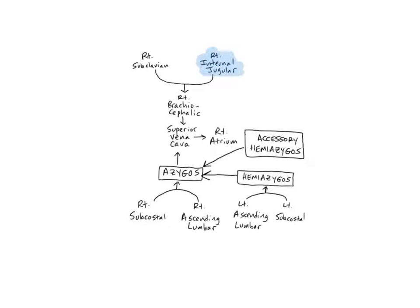The internal jugular veins begin at the base of the cranium and receive blood from numerous veins and sinuses of the face and neck. They anastomose with the subclavian veins to form the brachiocephalic veins. The internal jugulars drain the brain, meninges, bones of the cranium, and muscles and tissues of the face and neck.